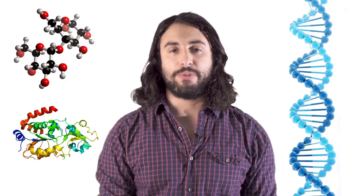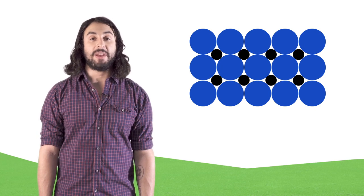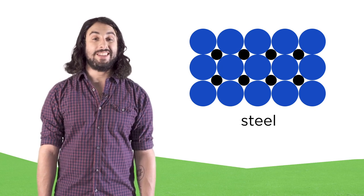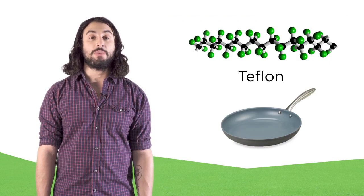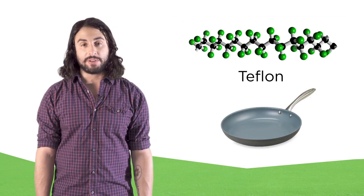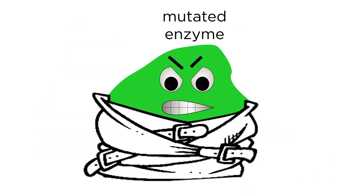We can take nature a step further and synthesize novel materials with an array of purposes. Putting carbons in the empty spots of an iron lattice makes it stronger — we call this steel, which is used in most of the large structures we know today. Teflon, a carbon-fluorine polymer, is a nonstick substance that's highly resistant to chemical degradation. And carbon-based synthetic drugs like inhibitors that can silence a faulty enzyme hold the prospect of curing so many diseases.